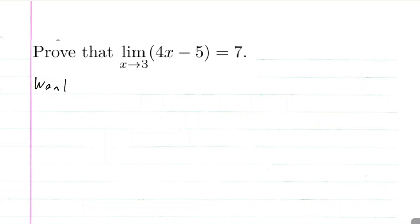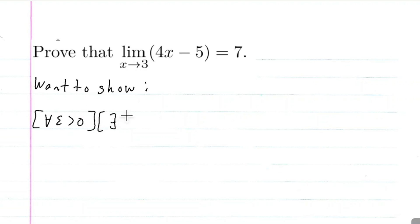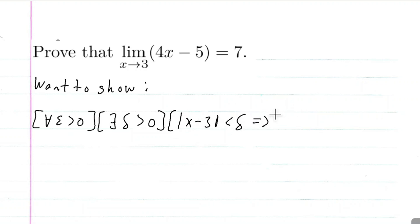So this is how we prove this using the epsilon-delta argument. We want to show that for every epsilon greater than 0, there exists a delta greater than 0, such that the absolute value of x minus 3 is less than delta implies that the absolute value of 4x minus 5 minus 7 is less than epsilon.